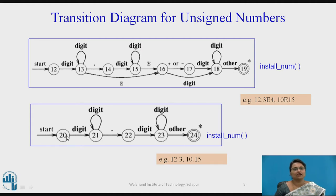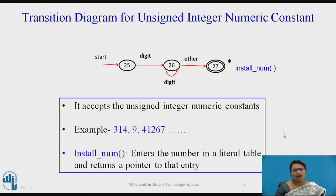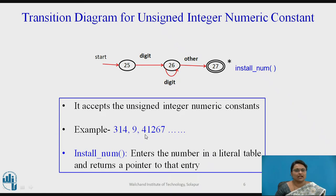For 10.15: 1 as a digit, 0 as a digit, point as a fractional value, then 1 as a digit, 5 as a digit, and finally it reaches the accepting state. Another transition diagram is for a simple numeric constant — digit or digit combinations reading 3, 1, 4, or 9, single or multiple digits. The function install_num installs the number in the literal table and returns a pointer to it.